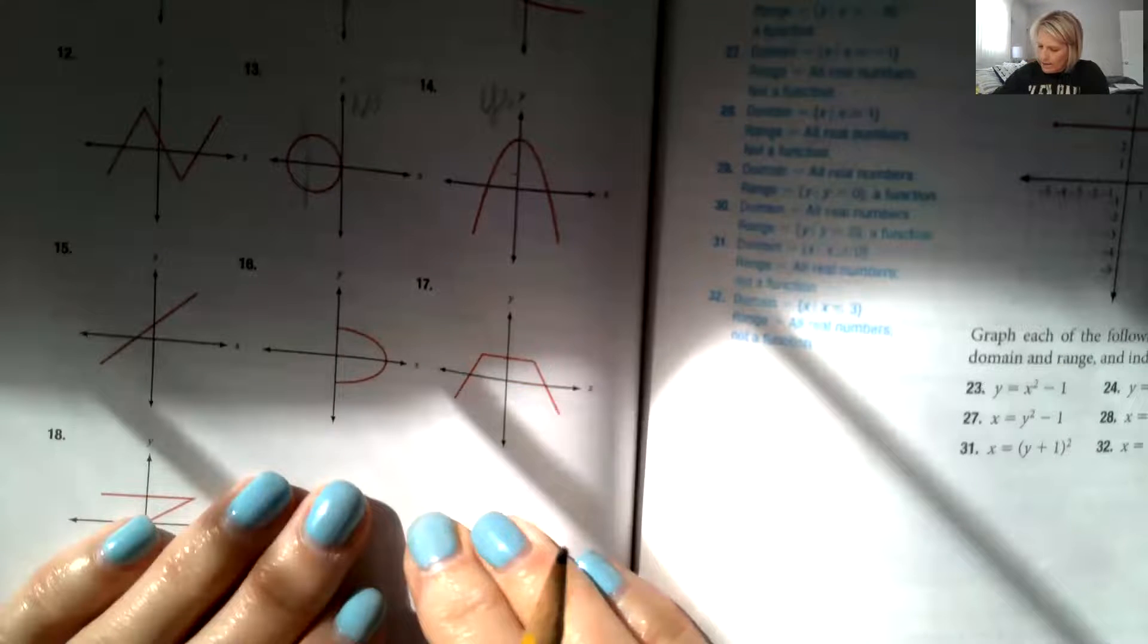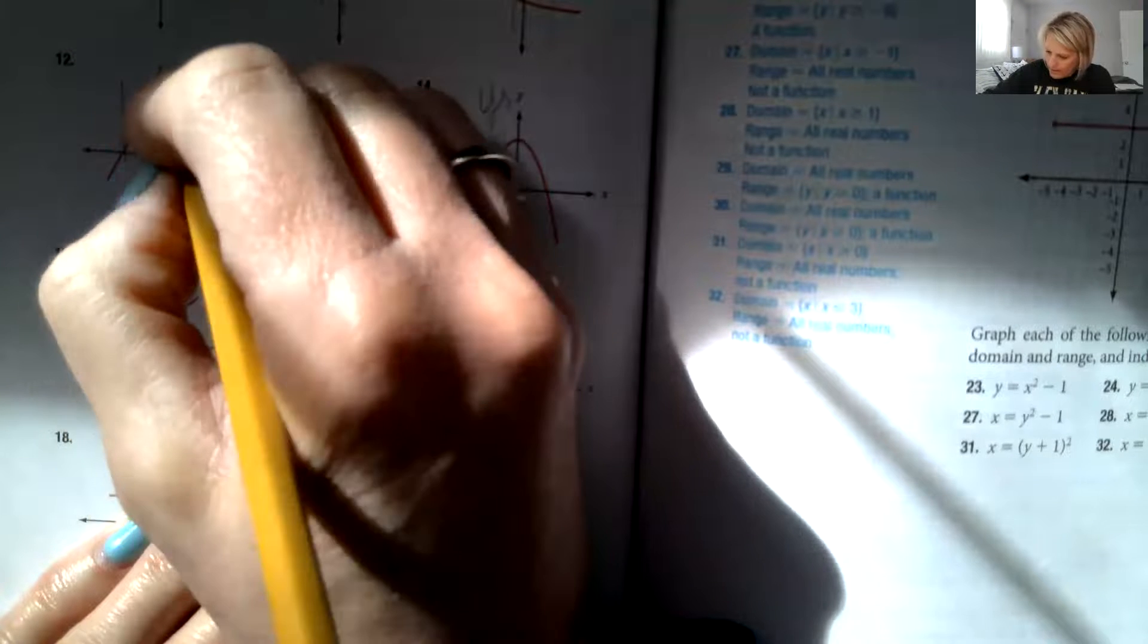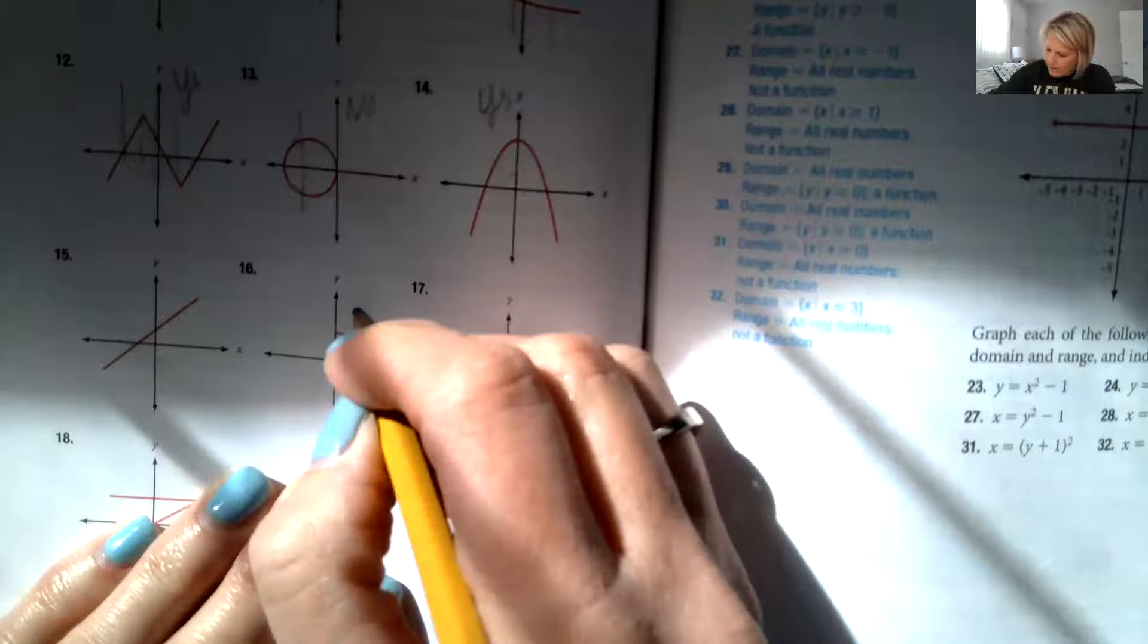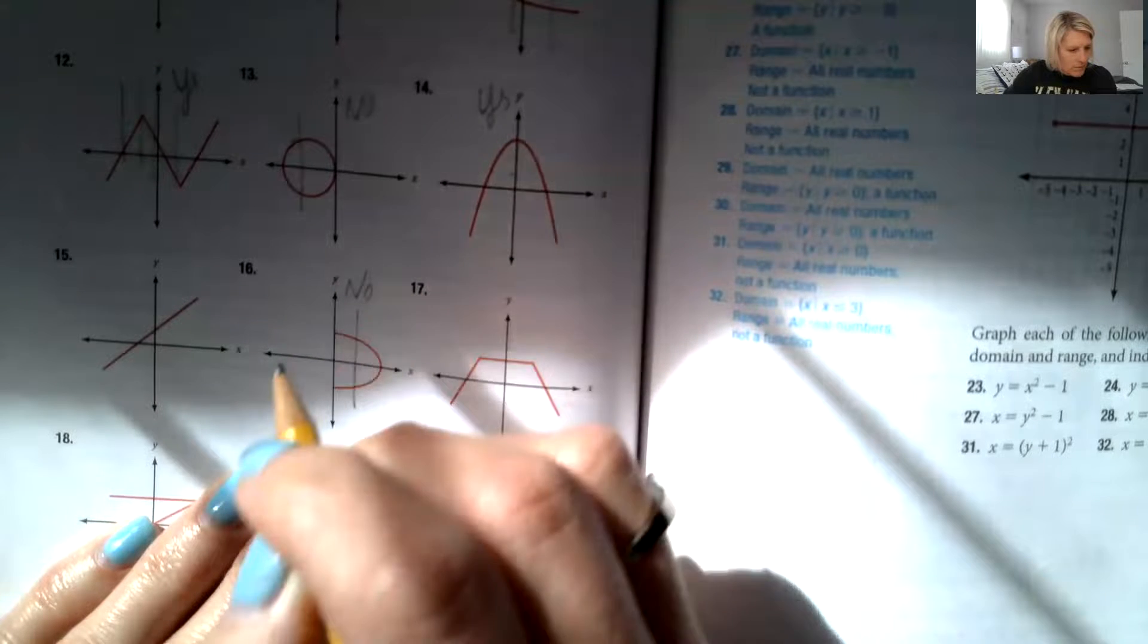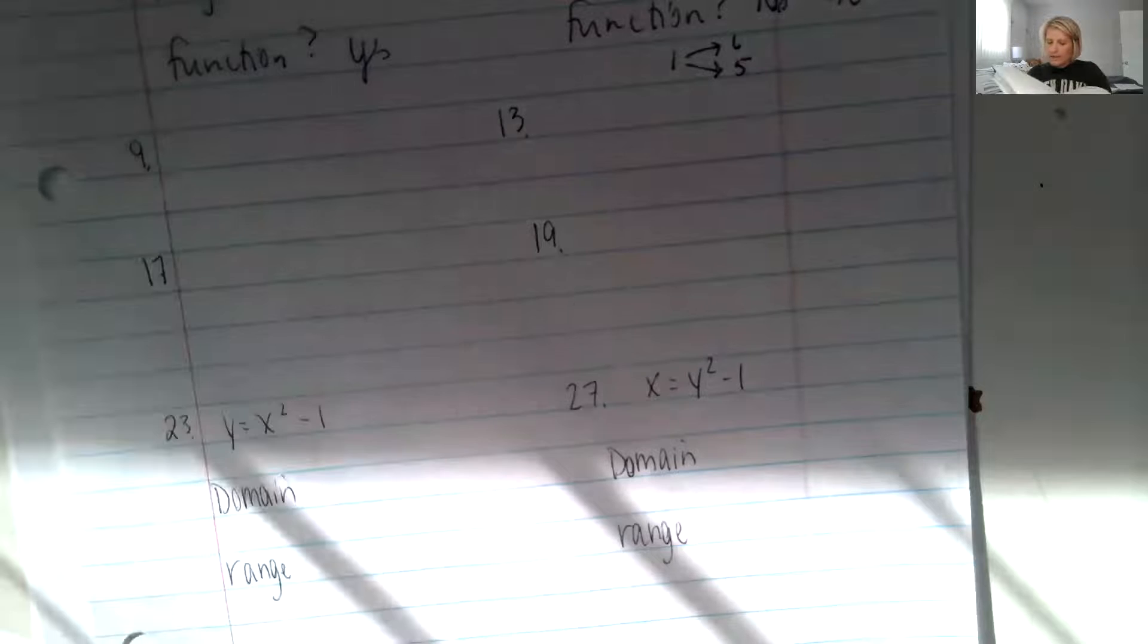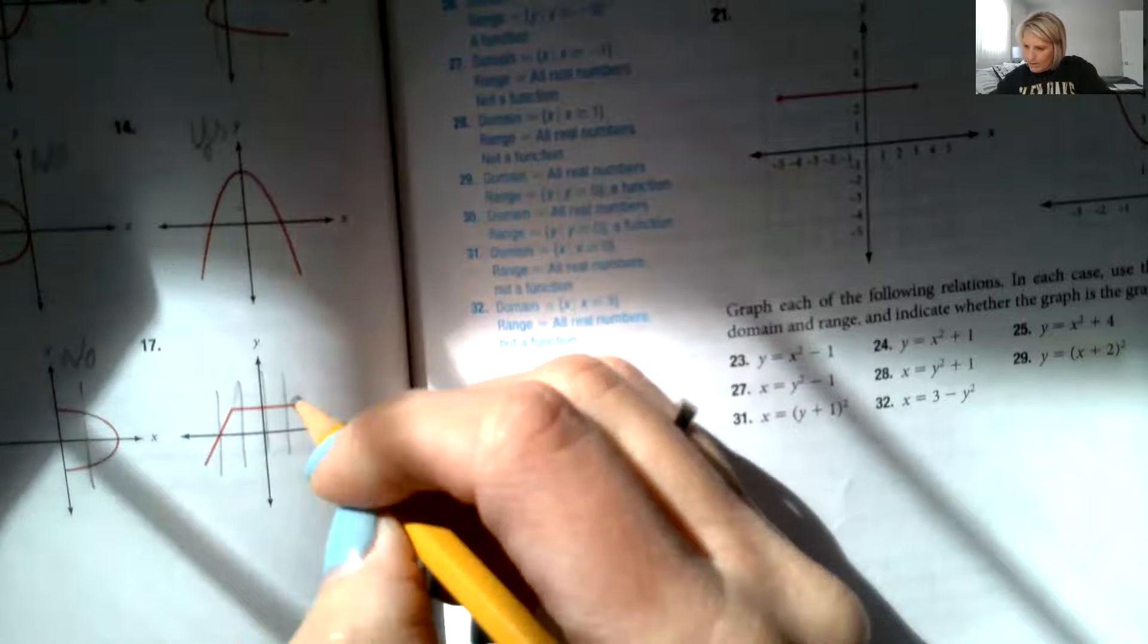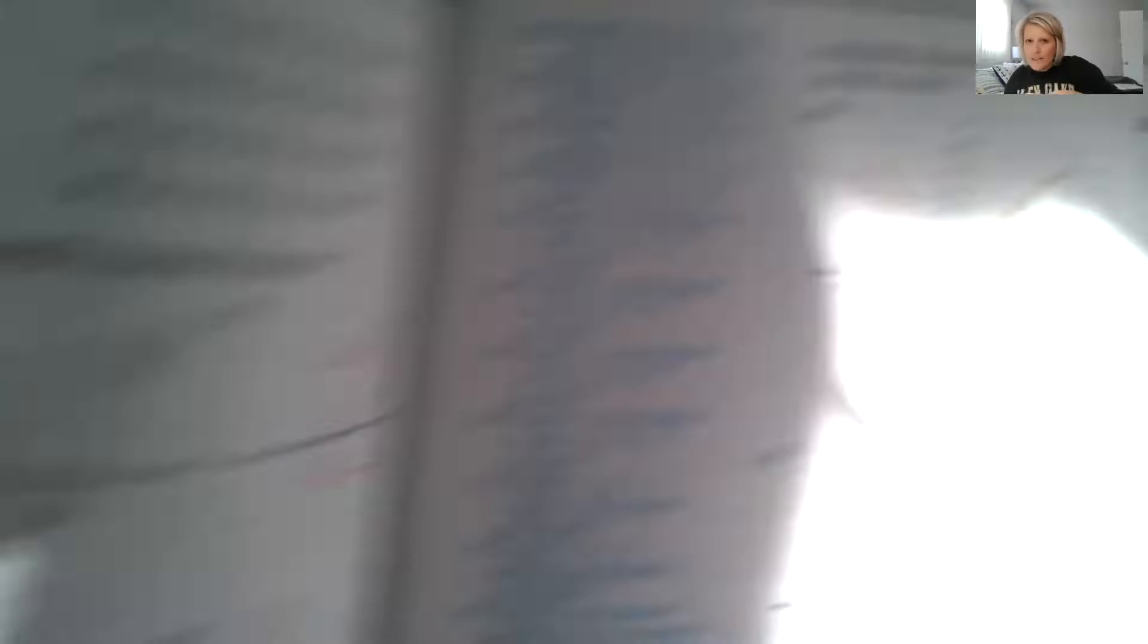Looks like 12 is a yes. 16 is a no. So let's jump to 19. 17. I was going to do 17. 17, yes. We can draw through there.